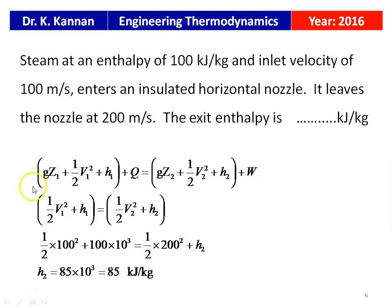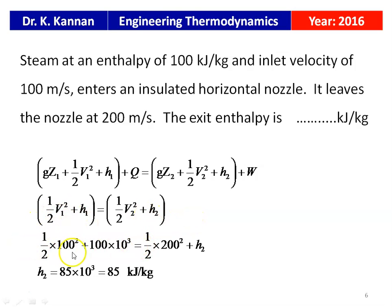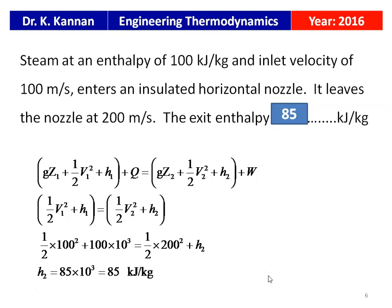Steam enters an insulated horizontal nozzle at an enthalpy of 100 kJ/kg and inlet velocity of 100 m/s, and leaves at 200 m/s. Using the steady flow energy equation with Q = 0, W = 0, and Z1 = Z2: ½V1² + H1 = ½V2² + H2. Substituting: ½(100²) + 100,000 = ½(200²) + H2. Solving: H2 = 85,000 J/kg = 85 kJ/kg.